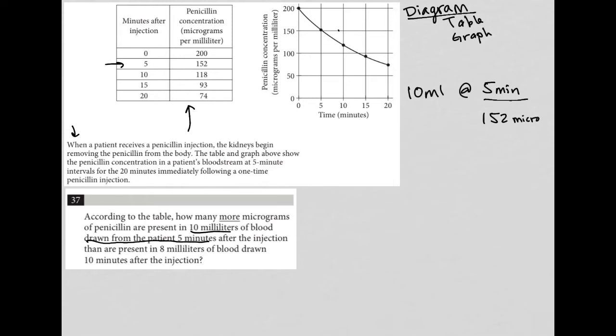So 152 micrograms per milliliter. So then we want to know what's going on or how many micrograms we have if there were 10 milliliters of blood drawn. So this is actually a great setup because now if I multiply these two things together, I can cross cancel the units, and what I get is 10 times 152, which is 1,520 micrograms.